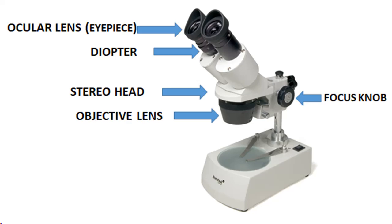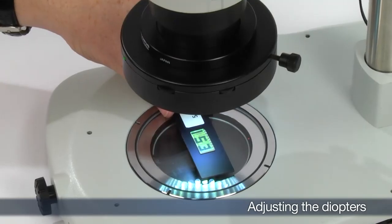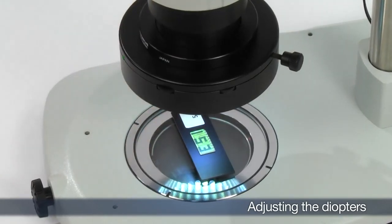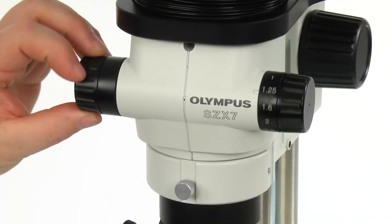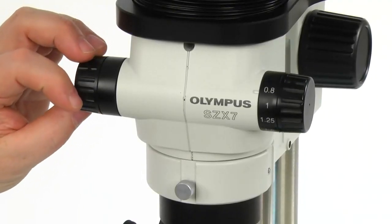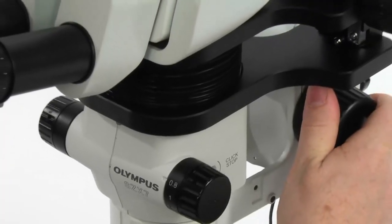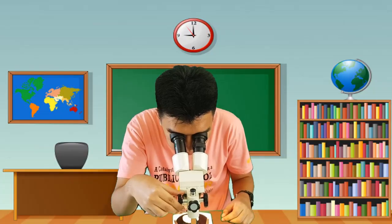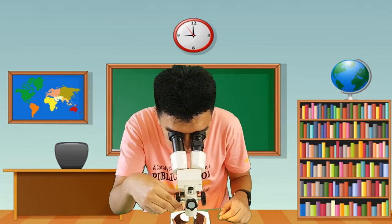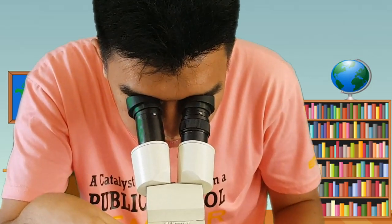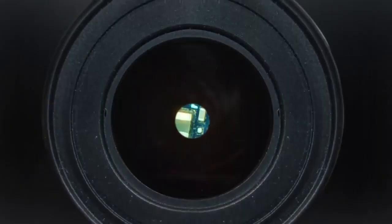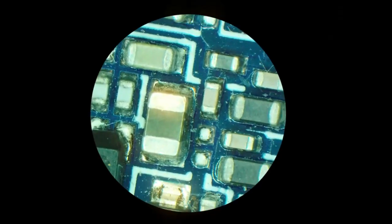Focus knob. Stereomicroscopes usually have one focus knob. It helps move the head of the microscope up and down to bring a sharp image of the object. Most dissecting microscopes have standard rack and pinion focusing. The rack is the track with teeth, and the pinion is the gear that rides on the teeth. The knob helps the pinion move along the rack.